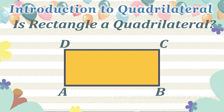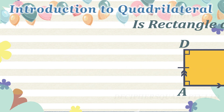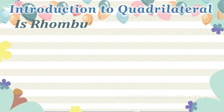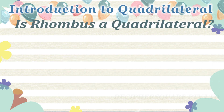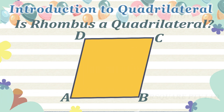Is a rectangle a quadrilateral? Yes, a rectangle is a specific type of quadrilateral in which all four interior angles are equal to 90 degrees. In a rectangle, the opposite sides are also equal and parallel.